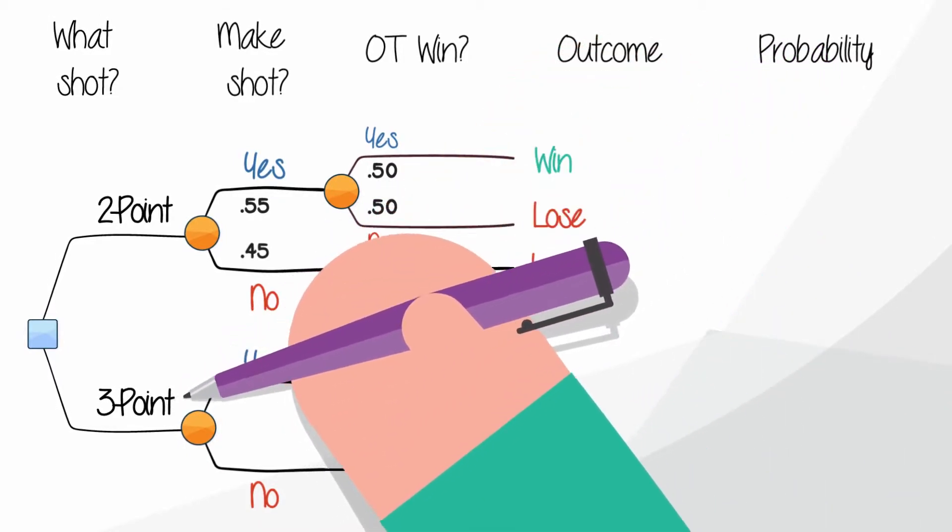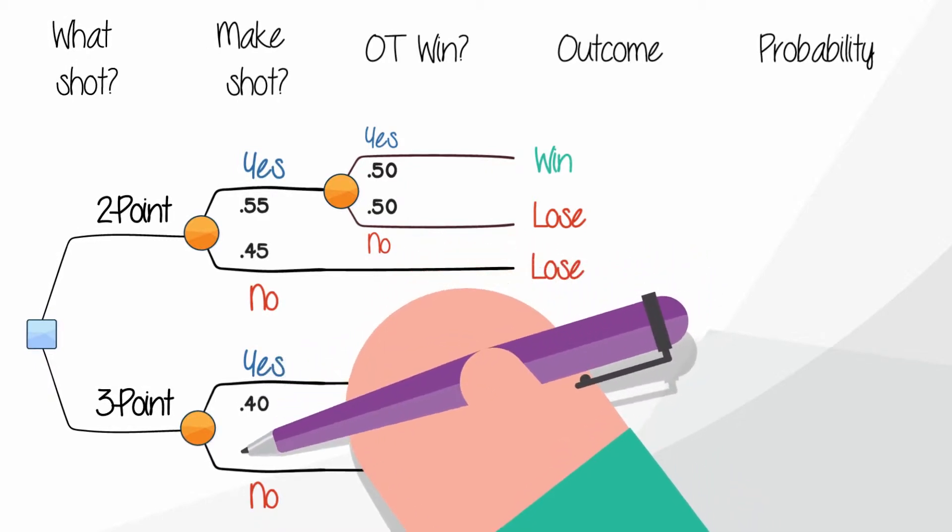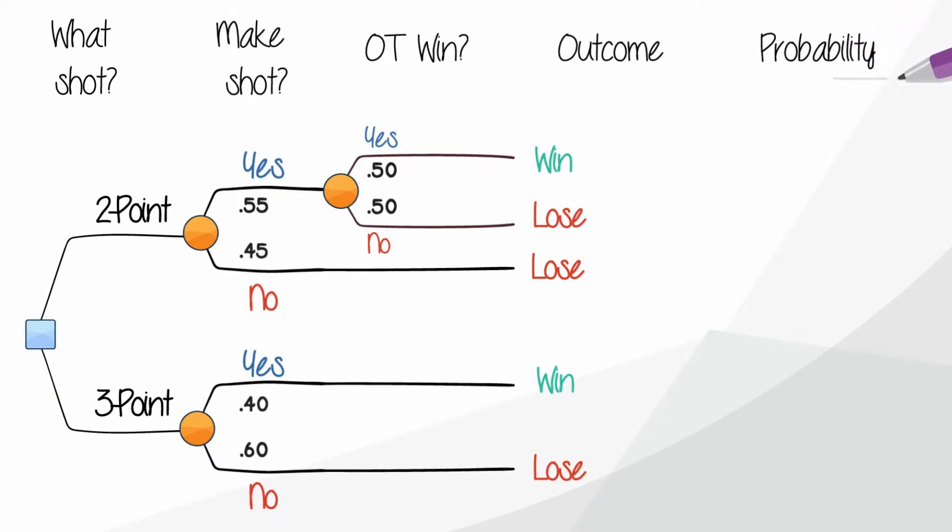For the three-point shot, let's assume you've averaged 40% for the season. That makes the chance of no for the three-point shot 60%. That's everything we need to decide what to do.